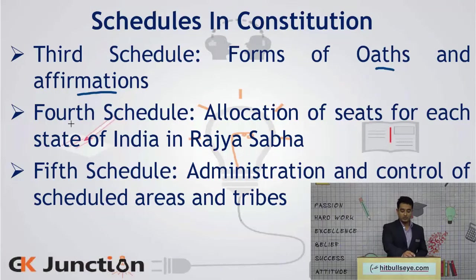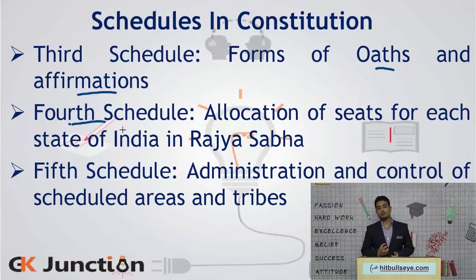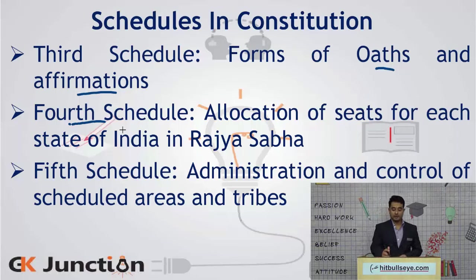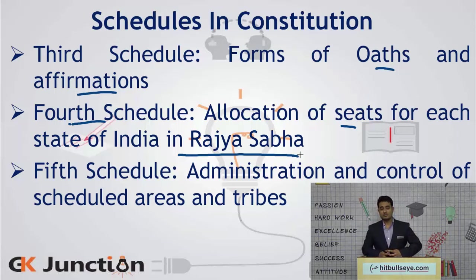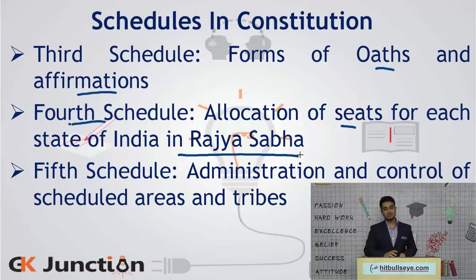The fourth schedule is a very important part of the federal character of our constitution. It provides the allocation of seats for each state in the Rajya Sabha, or the Council of States, which is the higher house. This allocation of seats is prescribed by the fourth schedule.